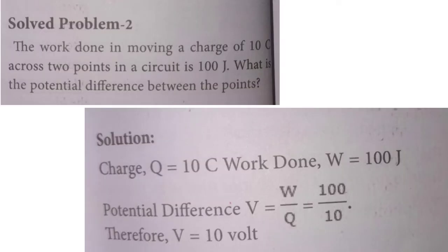You can easily understand this through this problem. Solved problem 2: The work done in moving a charge of 10 coulomb across two points in a circuit is 100 joules. What is the potential difference between the points? Charge Q = 10 coulomb, work done W = 100 joules. Therefore, potential difference V = W/Q = 100/10. Therefore, V = 10 volt.